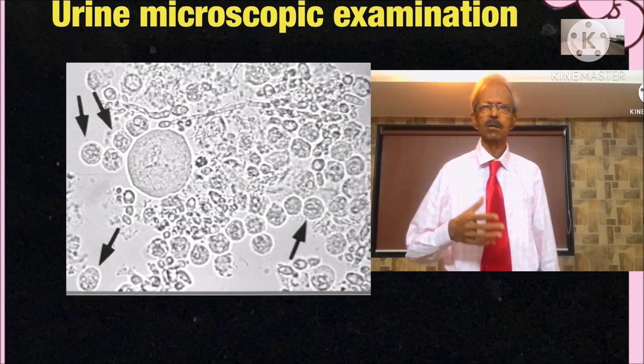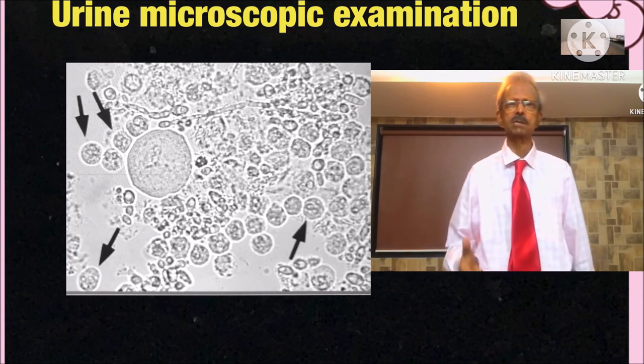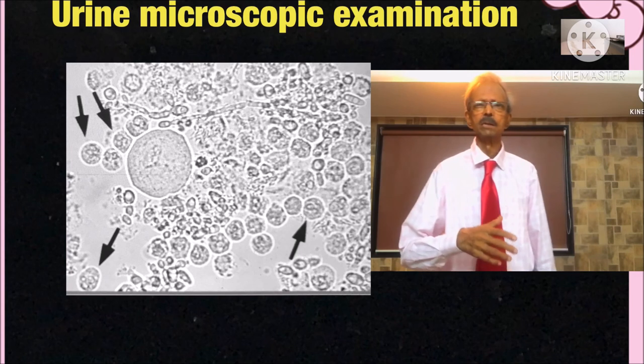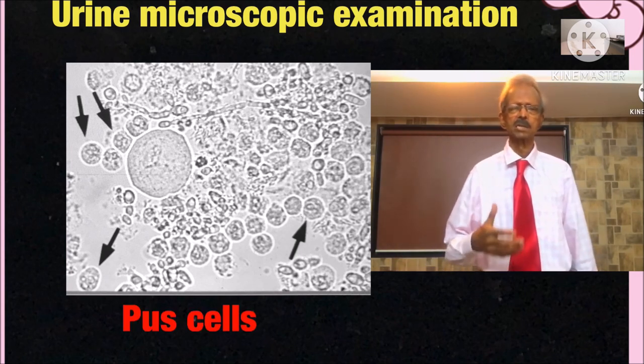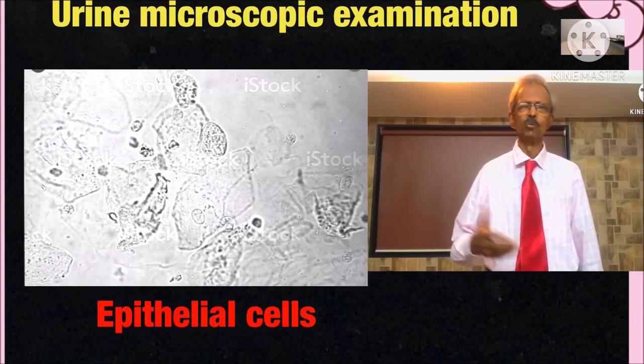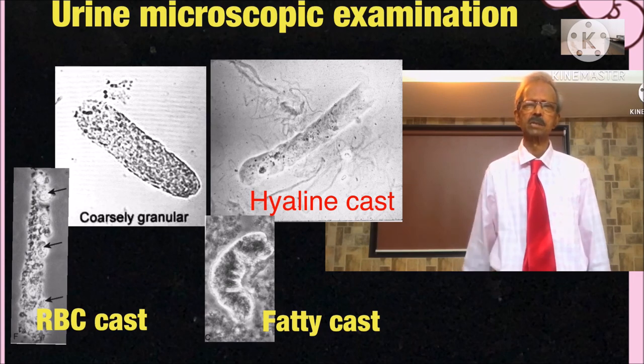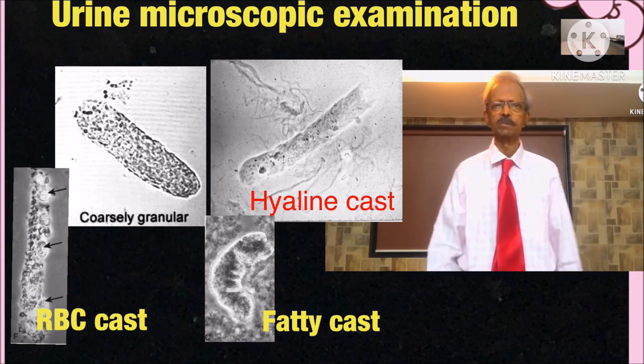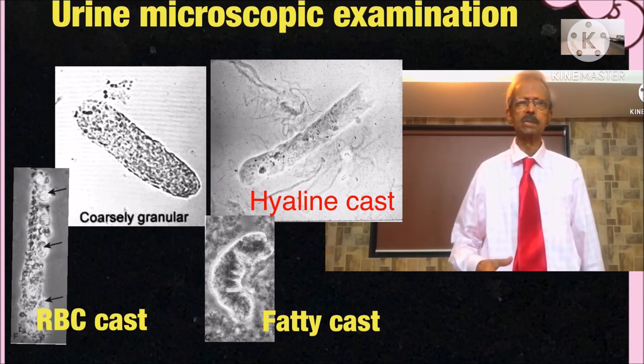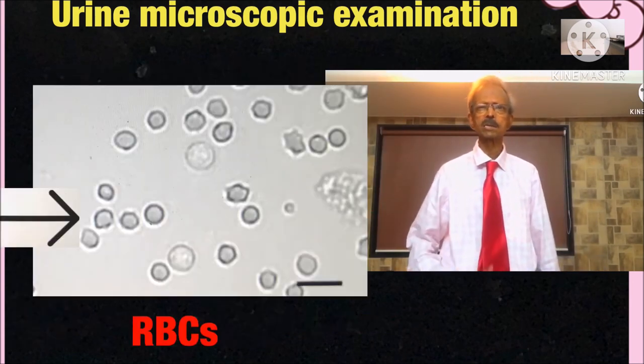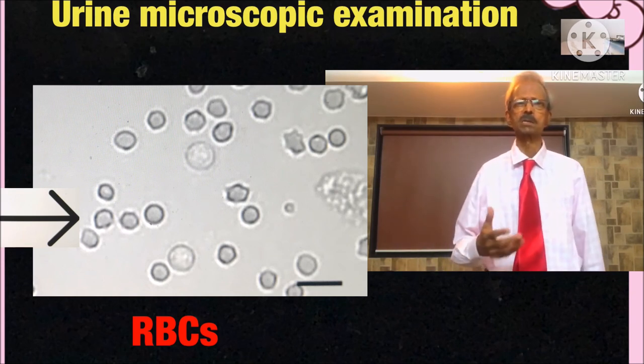However, in urinary tract infection, you may see the following materials in large number. Pus cells, epithelial cells, various types of casts like granular casts, hyaline casts, waxy casts, RBC casts, etc. And you also may see large number of red blood cells.